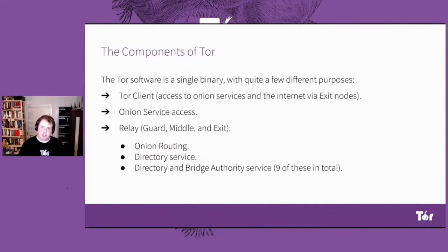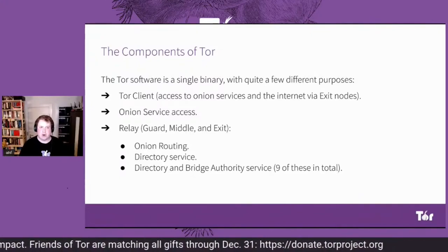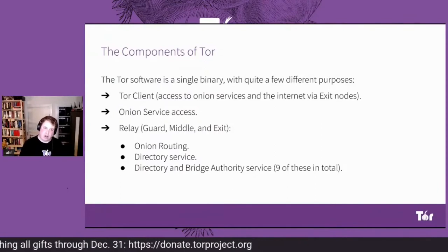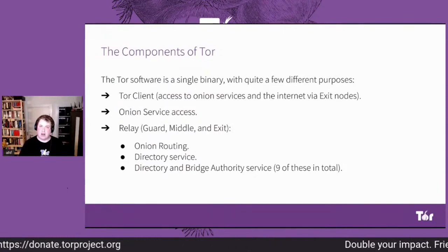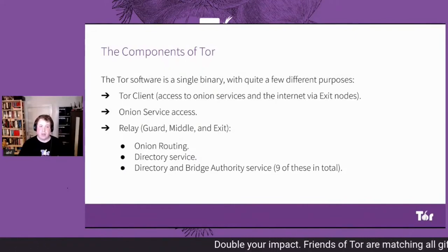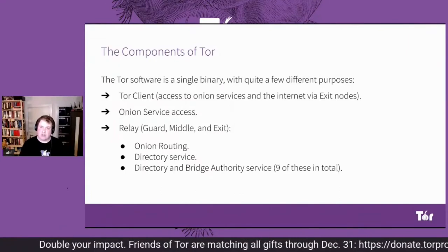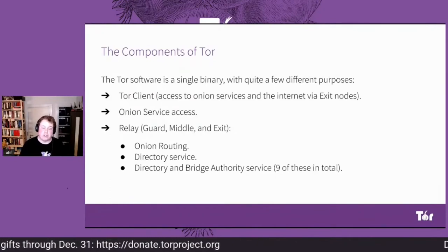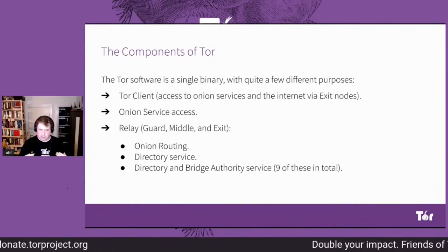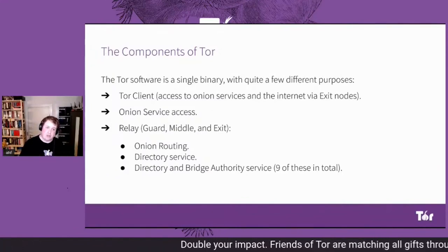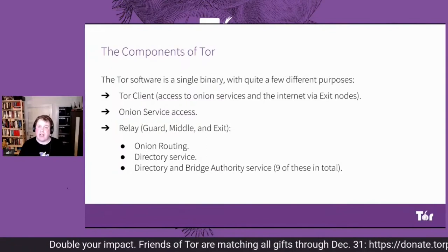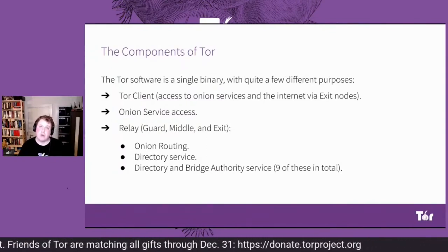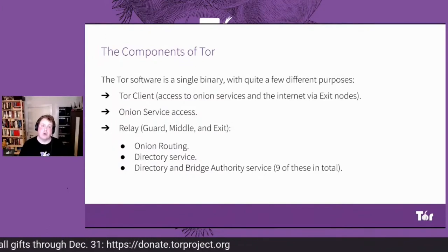The binary also provides the ability to host Onion services, so you can set it up together with a web server and host things as an Onion service. Additionally, the binary is also a relay — both a guard, middle, and exit, covering all three parts of the circuit. It has the Onion routing component and the directory service, which is used for clients to get an idea about the state of the network and know which nodes are in it. The binary also supports things like being a directory or bridge authority, though today we only have nine of these nodes in the network in total.